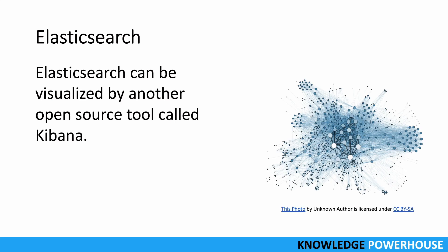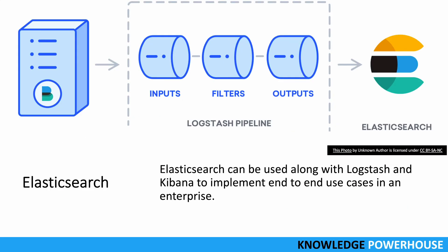When you need to visualize results, you can use the open source tool Kibana to visualize whatever is stored in your Elasticsearch database — you can see how clusters are formed. You can also use Logstash and Kibana together to implement end-to-end use cases: a Logstash pipeline stores data into Elasticsearch, and Kibana visualizes it, with Elasticsearch serving as the backend for queries. These three components together form a very good architecture for search capabilities in your system.